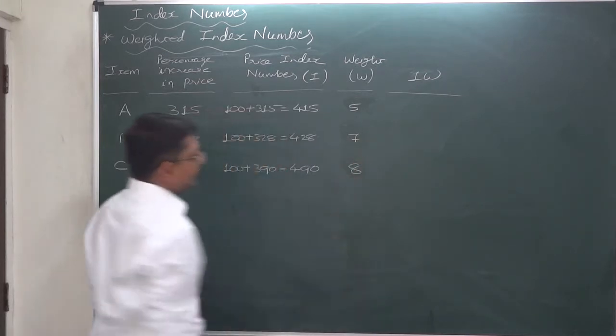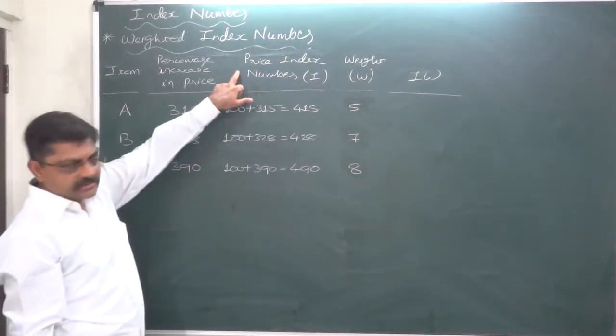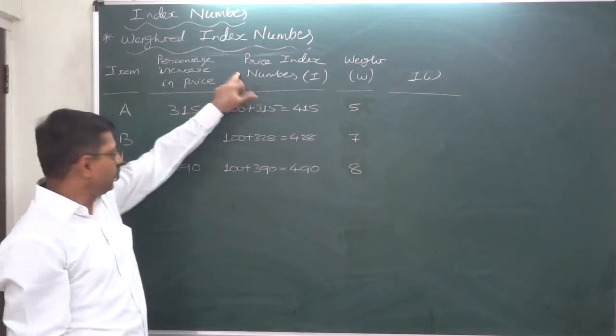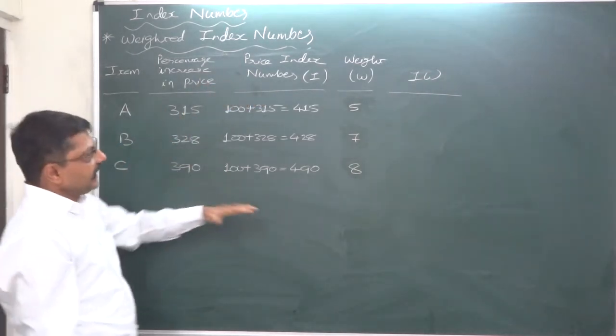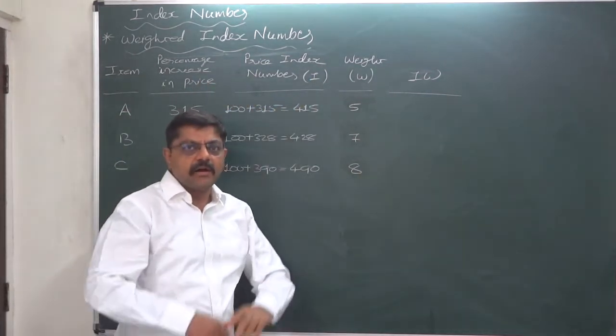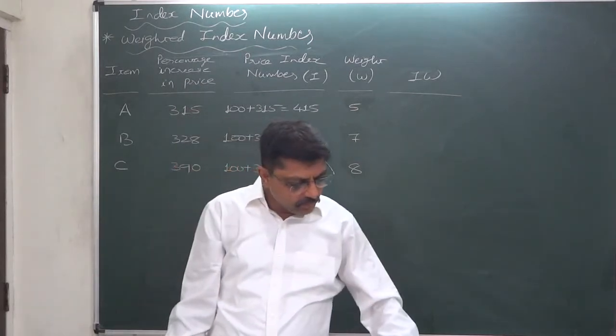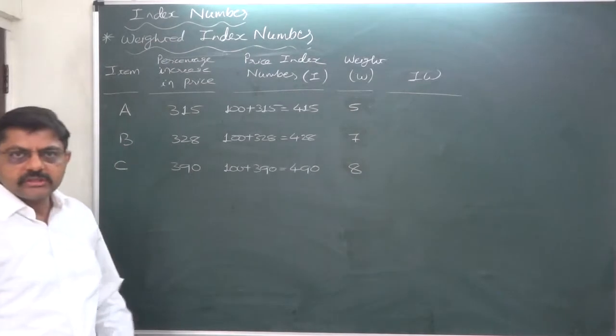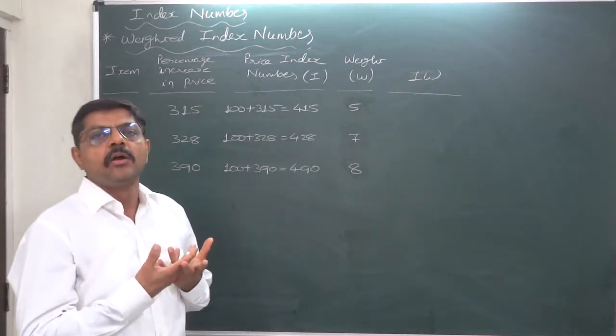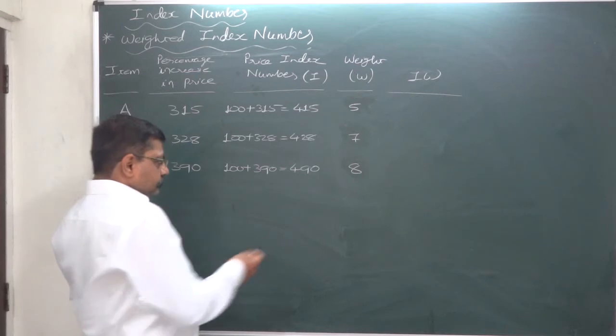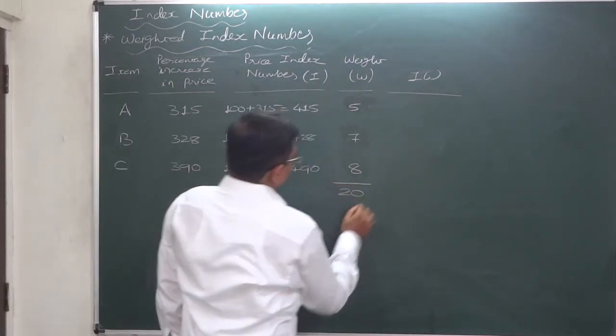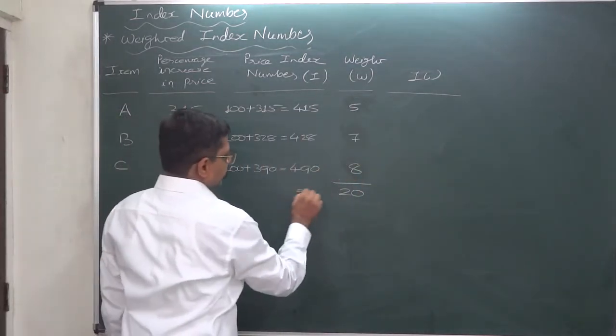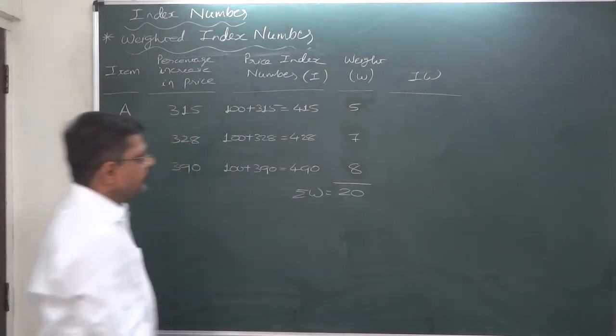Yes, now we have price index numbers or percentage price relatives of all the three commodities, and weights are readily available. How readily available? The relative importance of these things are in the ratio of 5 is to 7 is to 8. Okay, so these ratios are considered as weight.